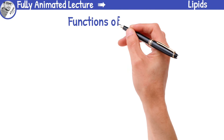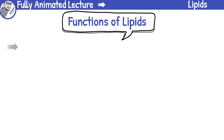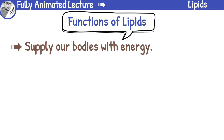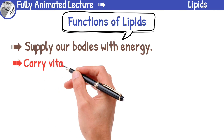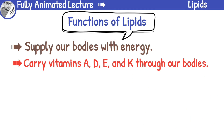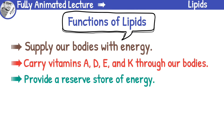Now we are going to talk about the functions of lipids and why they are important for our bodies. Firstly, lipids supply our bodies with energy — they are broken down into fatty acids and used as a source of fuel for our cells. Lipids also carry vitamins A, D, and K through our bodies. These vitamins are fat-soluble, which means they need lipids to be transported and absorbed properly. Lipids also provide a reserved store of energy; excess energy from the food we eat is stored in adipose tissue as triglycerides, which can be used later when our bodies need it.